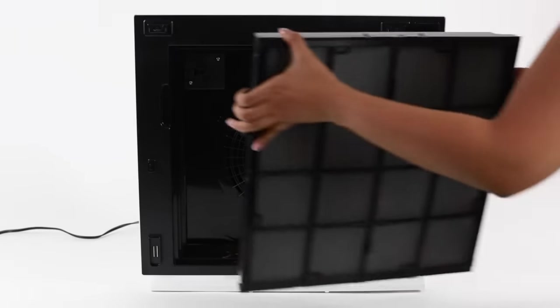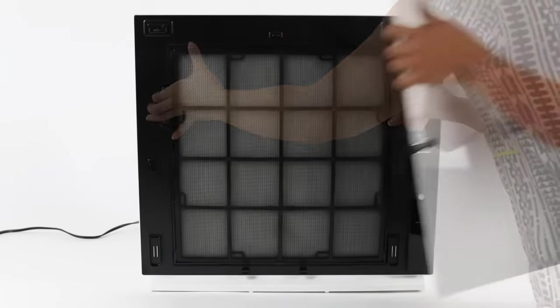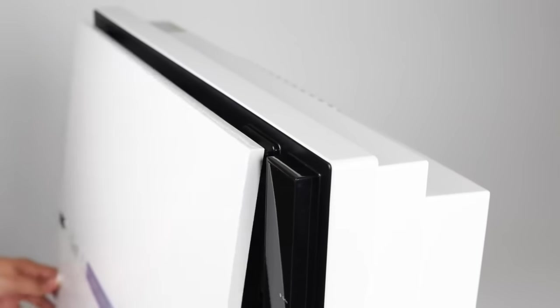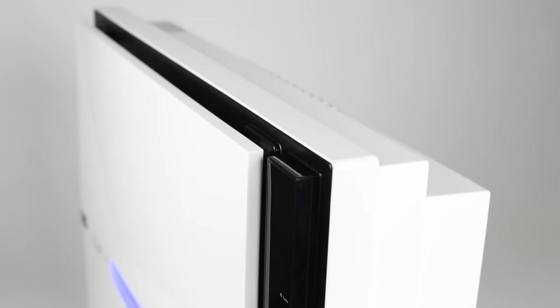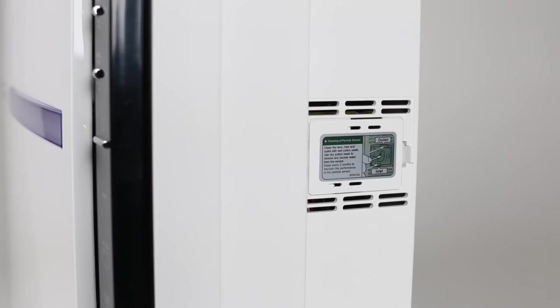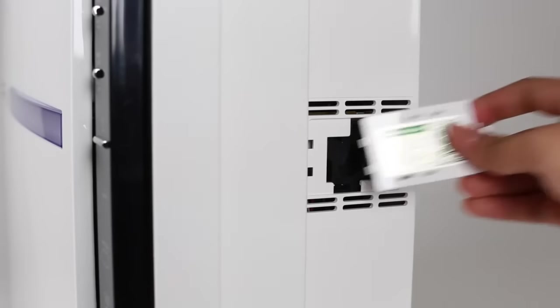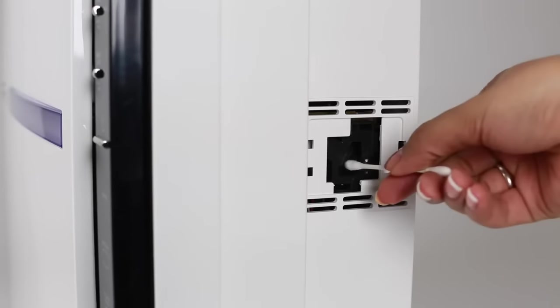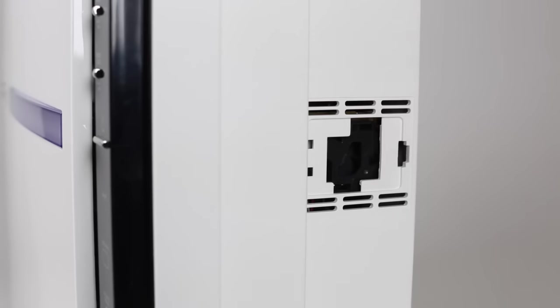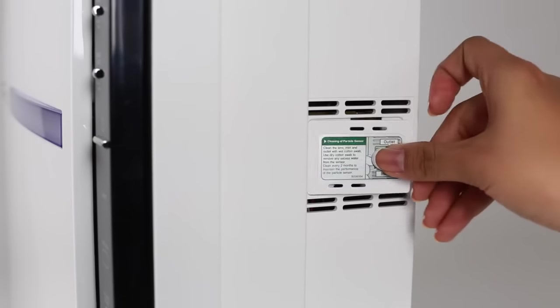Place your filter case back inside and carefully put the front panel back on. Your Minus A2 is now ready to get back to work, cleaning and refreshing your indoor air. It is also recommended to occasionally clean the Minus A2's particle sensor located on the side. Remove the door and clean the sensor inside using a clean, dry cotton swab and gently swipe away any dust.